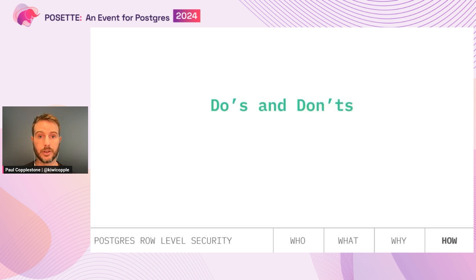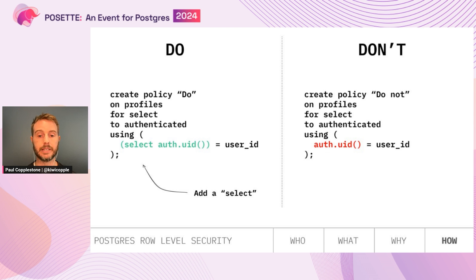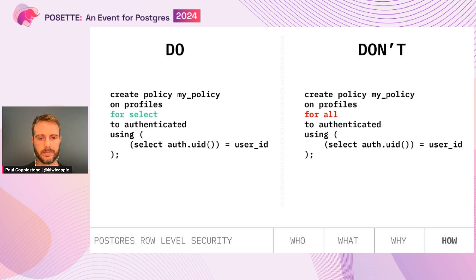A few do's and don'ts for Postgres Row Level Security. First: if you are calling a function inside your RLS policy, try to wrap it in a SELECT statement with parentheses. Without the SELECT, a function like auth.uid() gets evaluated for every single row. With a SELECT wrapper, the Postgres planner calls it once upfront. Also, as mentioned, avoid using the ALL default — keep your policies granular: one per operation (SELECT, INSERT, UPDATE, DELETE).